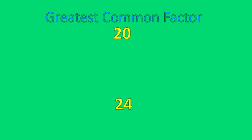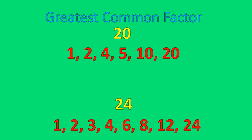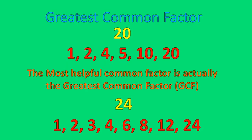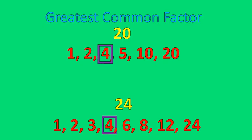Now let's talk about the most helpful common factor — the greatest common factor. With 20 and 24, we do the same process and list the factors of both numbers. Listing them quickly requires knowing your multiplication tables well — this step might take the most time, and that's okay. Every pair of numbers has a common factor of 1, the least helpful one, so we're not going to worry about that. We know they have 2 and 4 in common, so 1, 2, and 4 are the common factors. 4 is the greatest common factor.